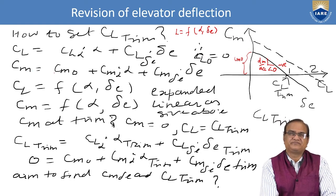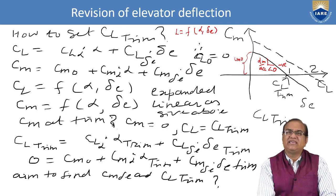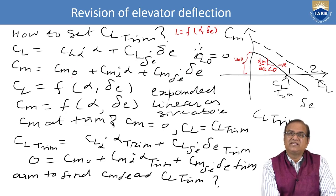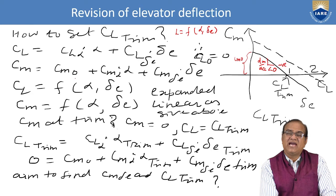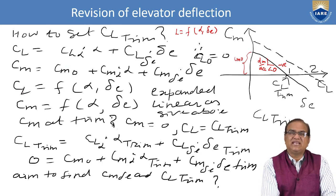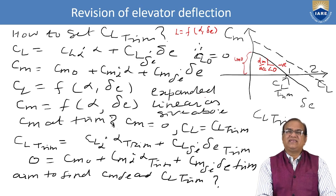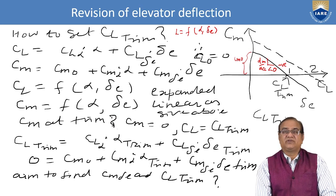For the moment coefficient: Cm = Cm_naught + Cm_alpha * alpha + Cm_delta_E * delta_E. We include Cm_naught here because the pitching moment coefficient exists due to Cm_AC. So CL is a function of alpha and delta_E, and Cm is also a function of alpha and delta_E. At trim, Cm = 0 and CL = CL_trim.